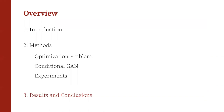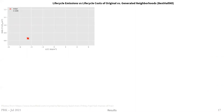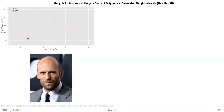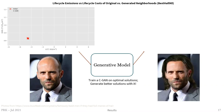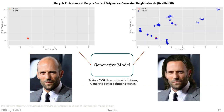The life cycle emissions versus life cycle costs of original versus generated neighborhoods for the best half of all experiments are shown in this plot. The training data is sparse and focused. Applying the generative model results in much denser and more optimal solutions, as you can see with the blue dots representing CGAN solutions compared to the red crosses representing the initial solutions.